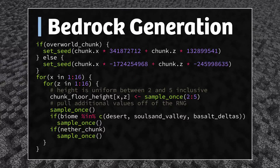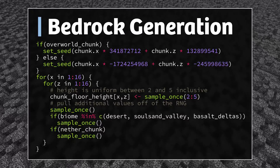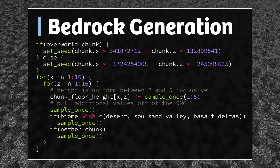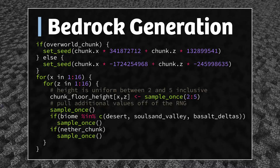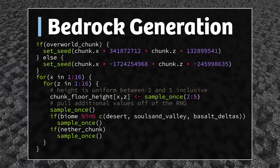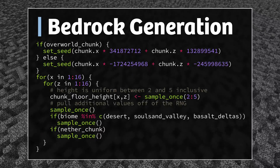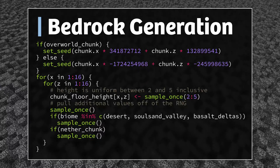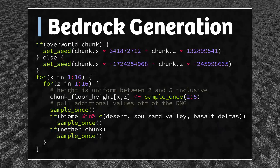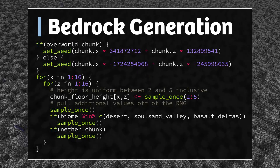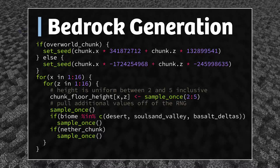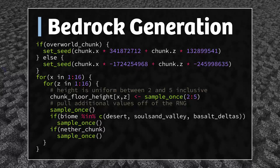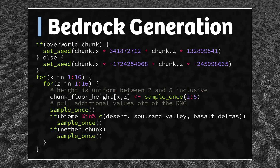This is the algorithm that Bedrock uses to generate bedrock floors in the overworld and the nether. The nether used to use a different method, but it had some issues and was fixed in 1.16. Bedrock generation is done per chunk, and the first thing to notice is that the world seed is not part of this calculation. All that matters when generating a chunk is the chunk coordinates. The same chunk in two different worlds will use the same seed when generating bedrock.